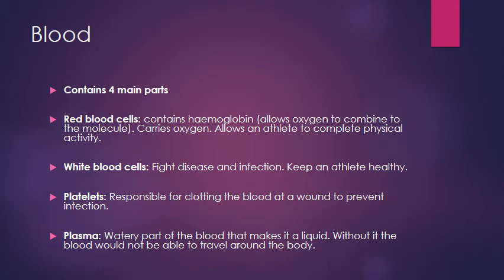Blood contains four main parts. Red blood cells contain haemoglobin, which makes them red and allows oxygen to combine with the red blood cell molecule — without haemoglobin, red blood cells could not carry oxygen. Because they carry oxygen, they allow an athlete to complete physical activity. A term you may encounter is oxyhaemoglobin, which is formed when an oxygen molecule combines with a haemoglobin molecule.